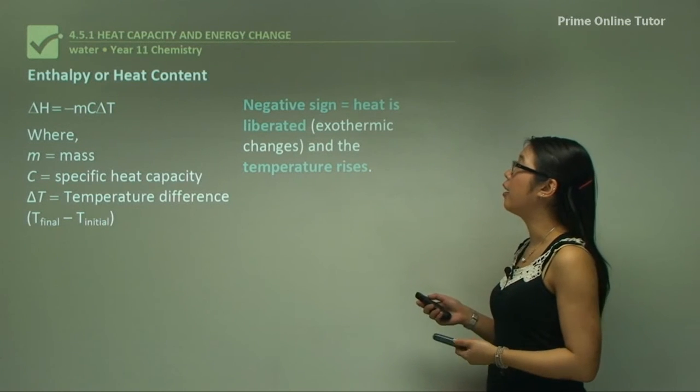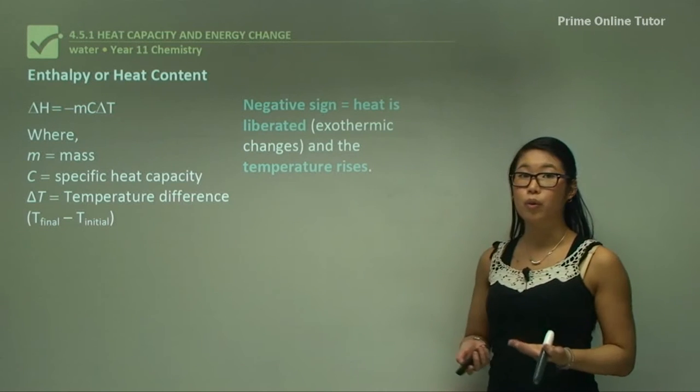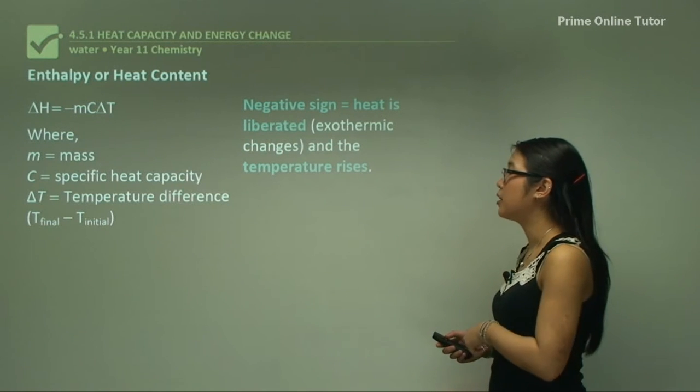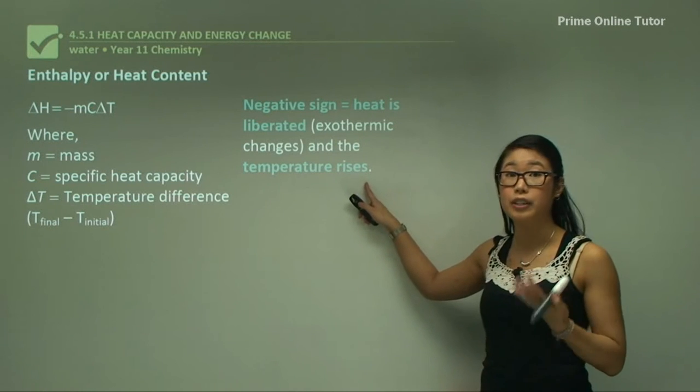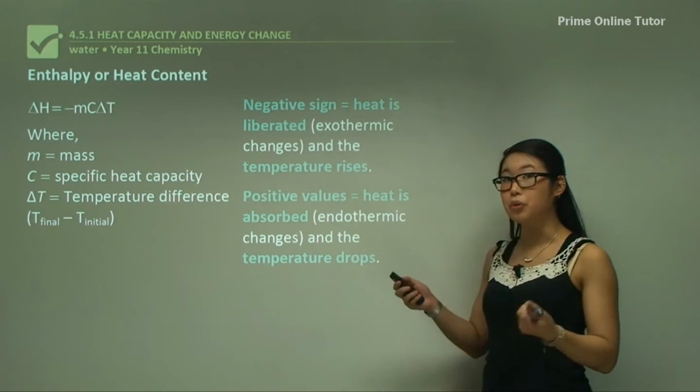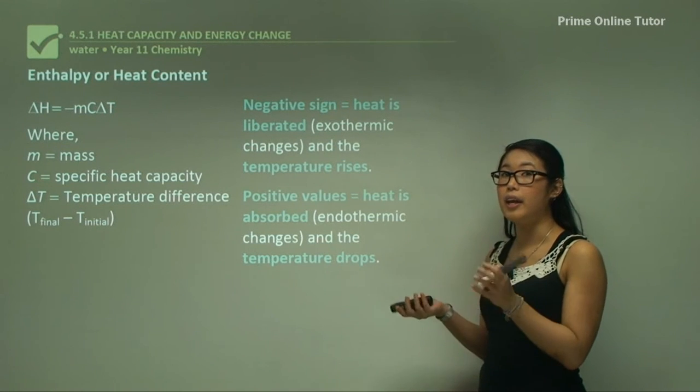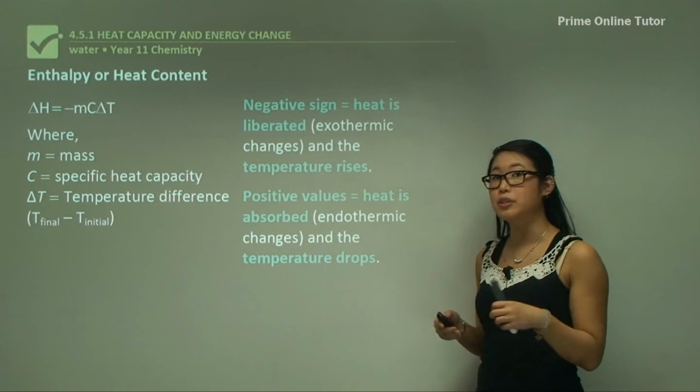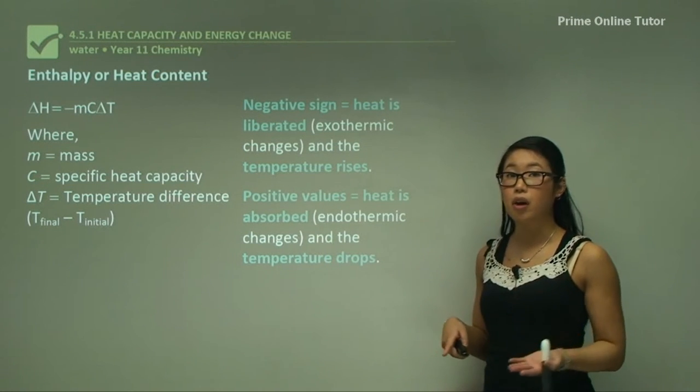A negative sign denotes that heat is liberated or it's exothermic, and that means when we touch it the temperature is feeling hot, so the temperature has risen. Positive values mean the heat is absorbed and therefore it's an endothermic change because it's pulling heat out from the surroundings into the system and the temperature drops, so it feels cold.